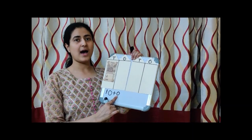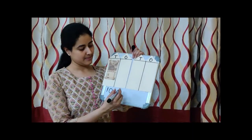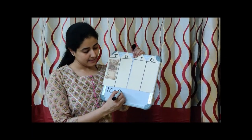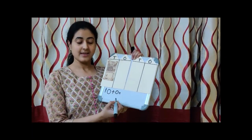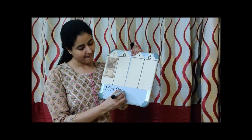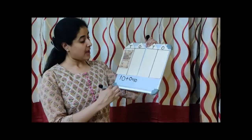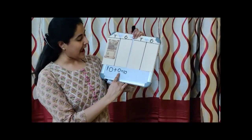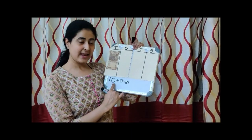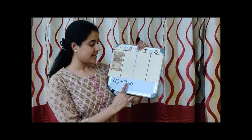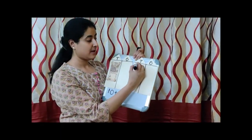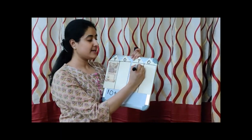Zero ones is — how to write 'is'? Is. Ten. One ten and zero ones is ten. We call it 'and' and not 'plus'. So, I am writing here the number ten. One ten.